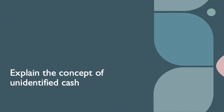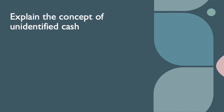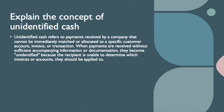The next question is: explain the concept of unidentified cash. Unidentified cash refers to payments received by a company that cannot be immediately matched or allocated to a specific customer account, invoice, or transaction. When payments are received without sufficient accompanying information or documentation, they become unidentified because the recipient is unable to determine which invoices or accounts they should be applied to.